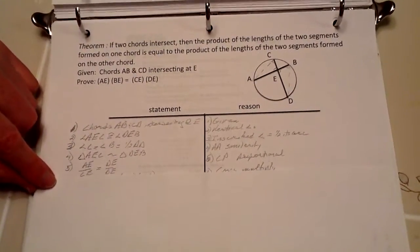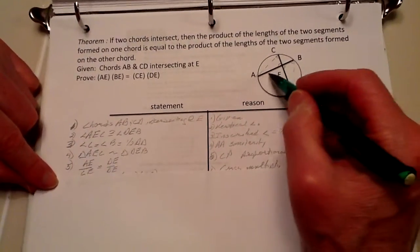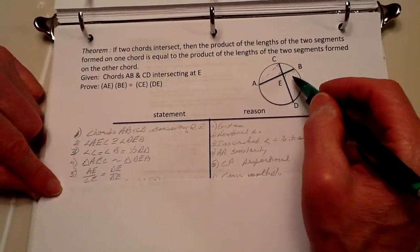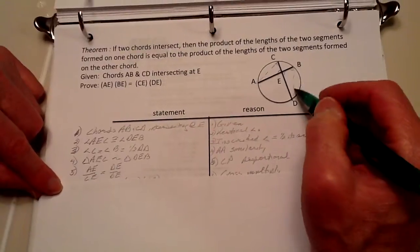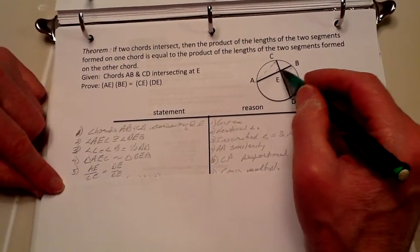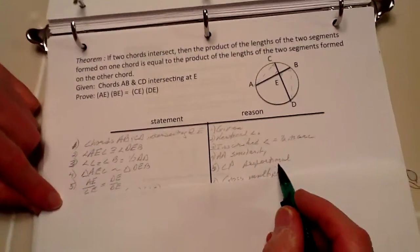And from that, we can use the proportions now of AE over CE is the same as DE over BE, and that's because they're corresponding parts, and therefore they're proportional.